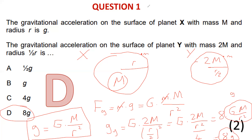A quick shortcut: doubling the mass doubles g. Halving the radius means 1/r² becomes 1/(r/2)² = 4, so you multiply by 4. Two times four equals eight. That's the fast way to calculate it without writing everything out. Let's continue to the next question.